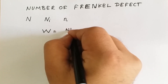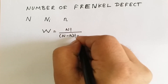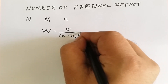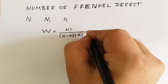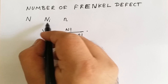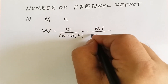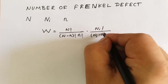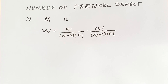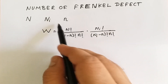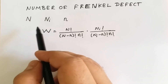The total thermodynamic probability W is given by: N factorial upon (N minus n) factorial times n factorial — this is the permutation of the total number of ions — multiplied by Ni factorial upon (Ni minus n) factorial times n factorial. This represents the permutation of the interstitial spaces. So this is our thermodynamic probability of the distribution of n Frenkel defects, having N ions and Ni interstitial spaces.